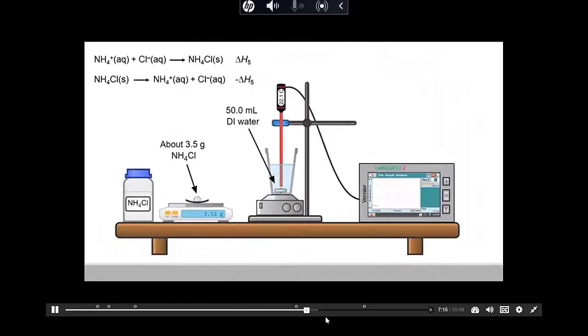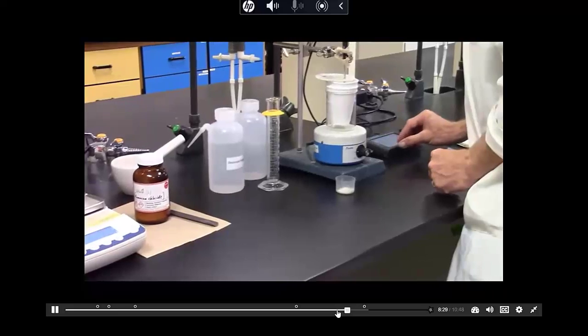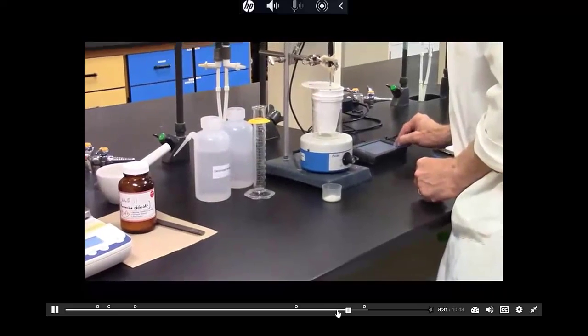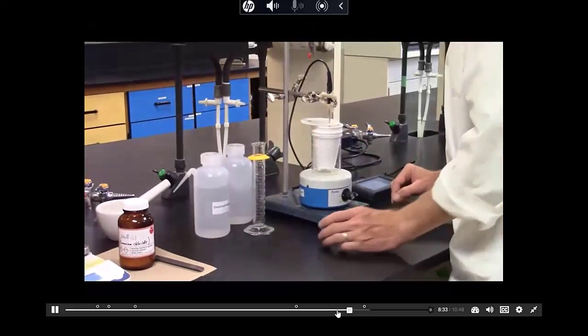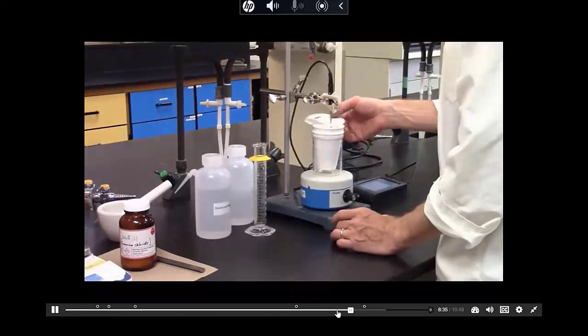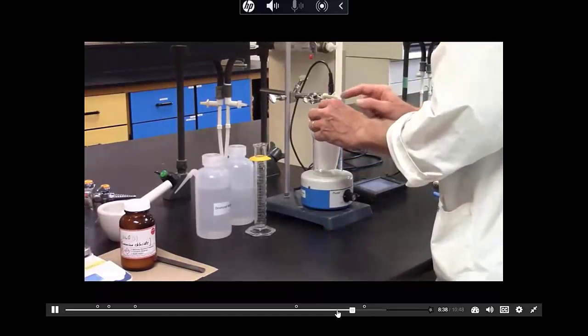In the last part of the experiment, data is collected with the goal to ultimately determine delta H5. Scott taps the start button to start the temperature versus time data collection. When the temperature has stabilized, he adds the ammonium chloride to the water.